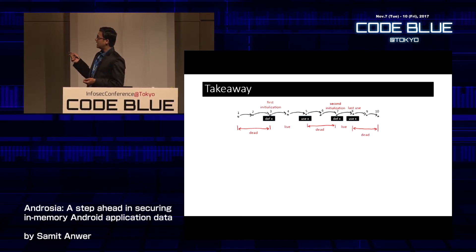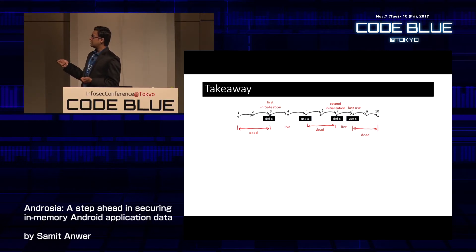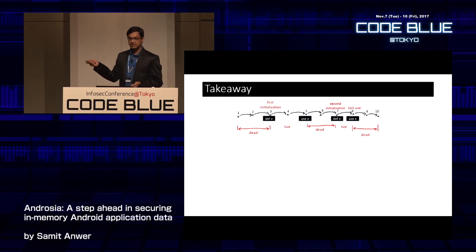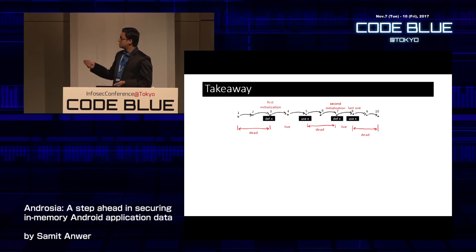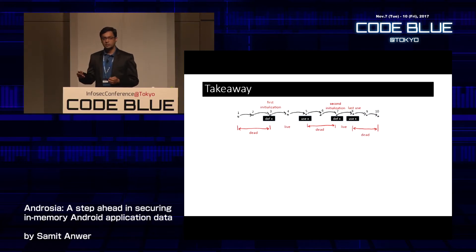At statement 7, variable x is redefined — perhaps with another object initialization. Between statements 5 and 7 there is no use of x, so x is dead between 5 and 7. It becomes live again at 7 when redefined and is subsequently used at statement 8. Beyond statement 8 there is no definition or use of x, so it is dead beyond statement 8.